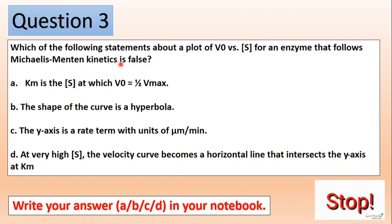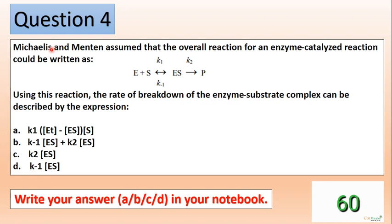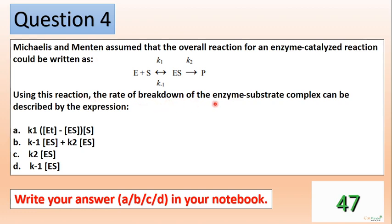Okay guys, moving to the next question. Michaelis and Menten assumed that the overall reaction for an enzyme-catalyzed reaction could be written as a given scheme. Using this reaction, the rate of breakdown of enzyme-substrate complex can be described by what expression?